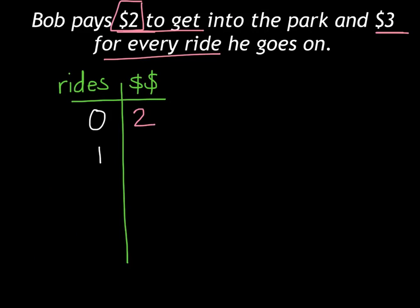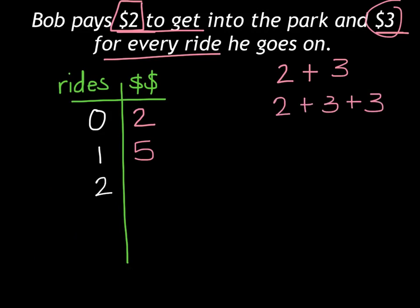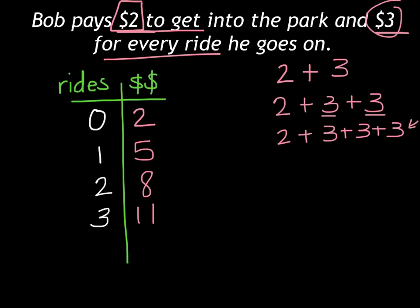If he goes on one ride, it costs that $2 plus $3 for the one ride, so his total cost is $5. If he went on two rides, it's $2 to get in plus $3 and $3 for two rides: $6 plus $2 equals $8. Three rides: $2 plus $3 three times equals $11. Four rides: $2 plus $3 four times — that's $12 plus $2 — equals $14.